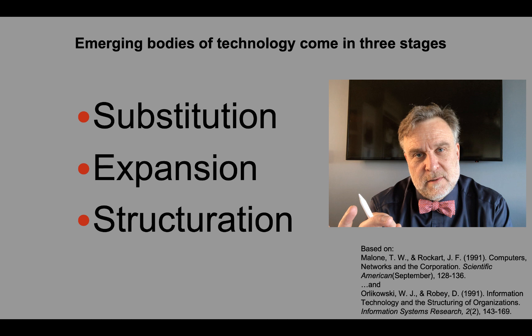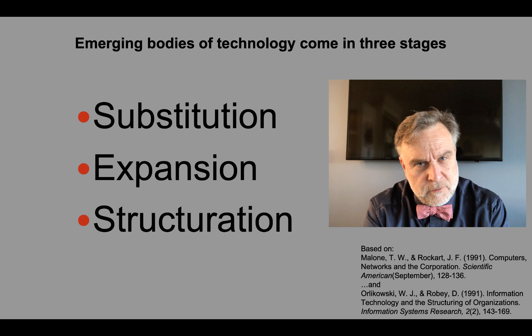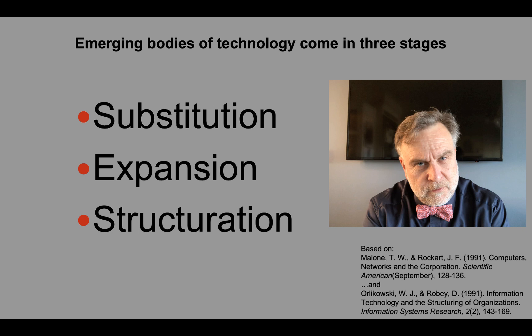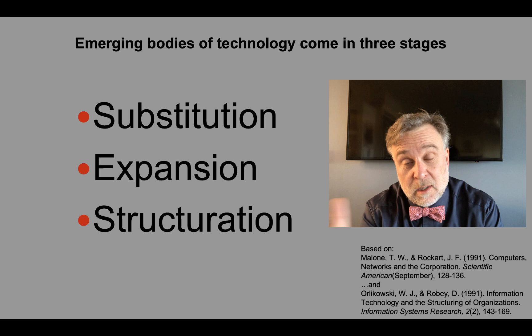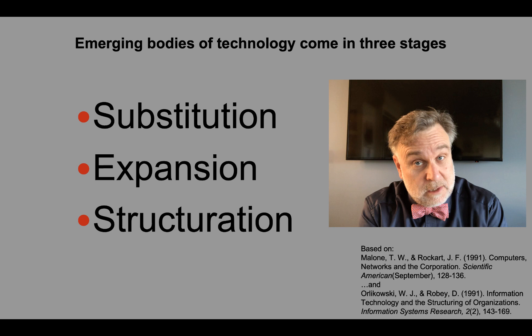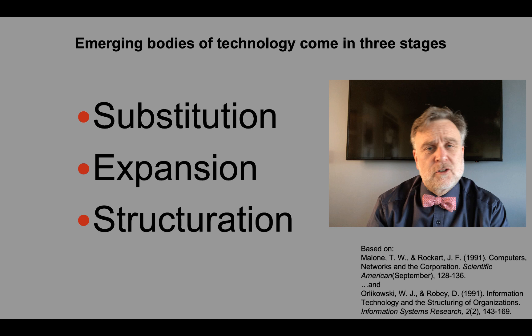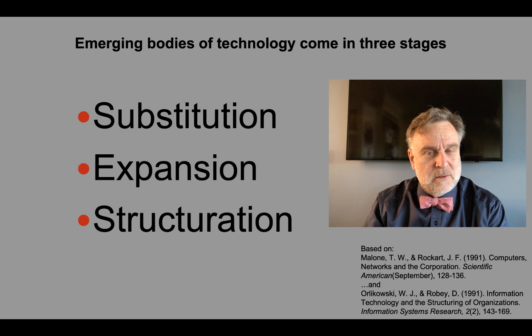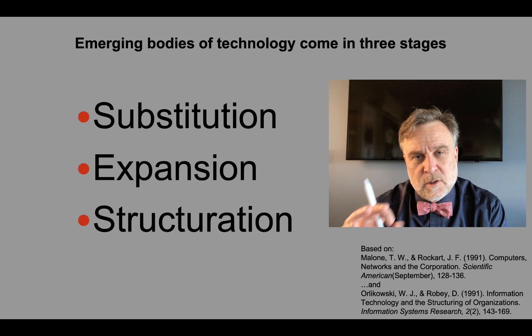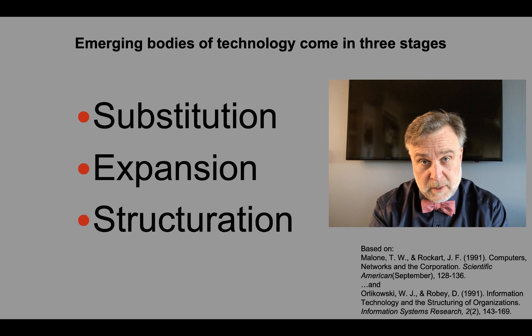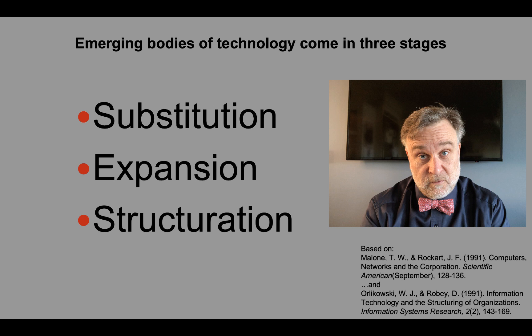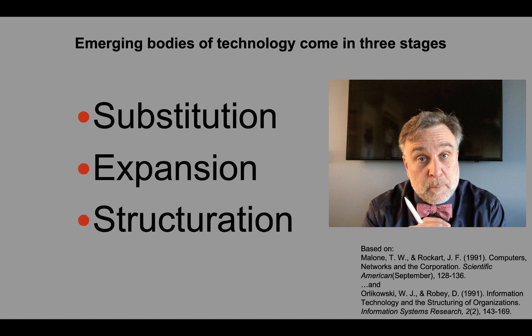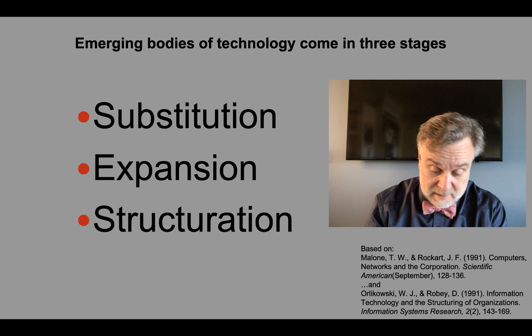The fourth and final process is emerging bodies of technology. A general technology is one that can be used in many settings — like computers, telephones, electricity, the internal combustion engine, railways, canals. These technologies have a vast impact on society, but it happens in three steps. First is substitution — you take the new technology and use it instead of what's there. Then an expansion phase where it becomes more popular, cheaper, and used by more people. And then the structuration phase, where society, organizations, and processes become totally dependent on the existence of that technology.